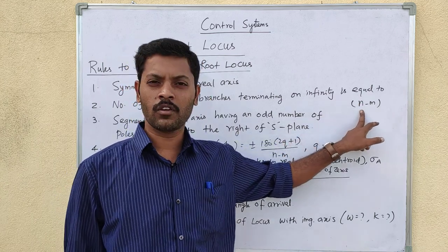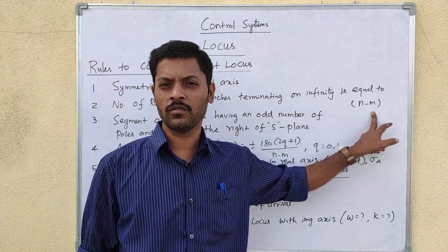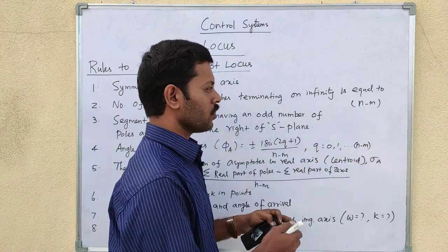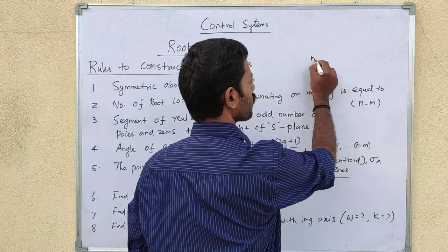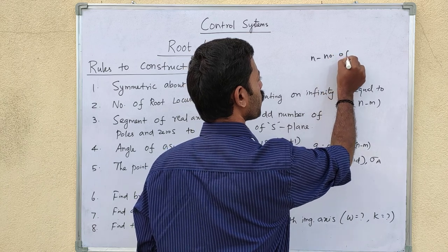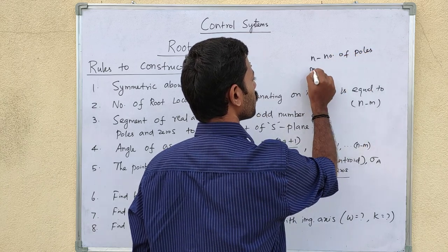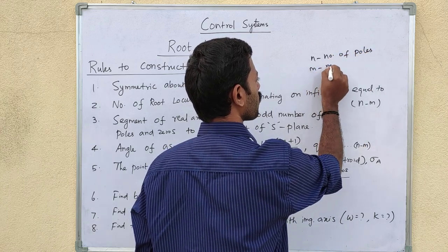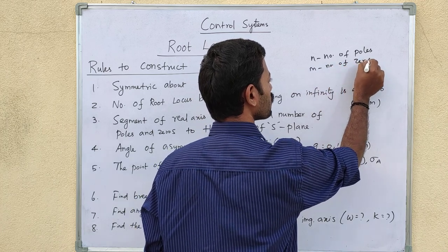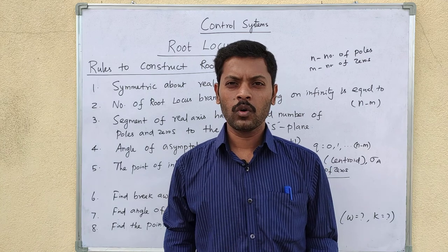Where n is the number of poles and m is the number of zeros. So we can see that the number of poles determines how many branches there are in total.